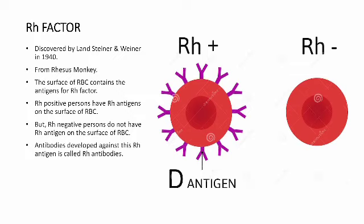RH positive persons have RH antigens on the surface of RBC, but RH negative persons do not have RH antigens on the surface of RBC. This is the difference between RH positive and RH negative. Antibodies developed against the RH antigen are called RH antibodies.